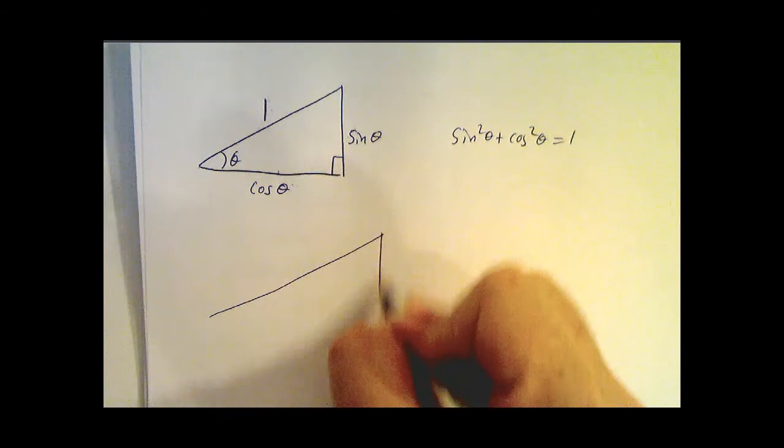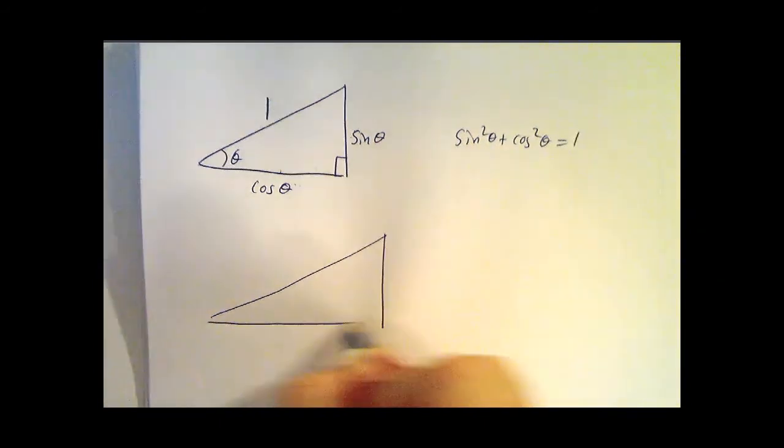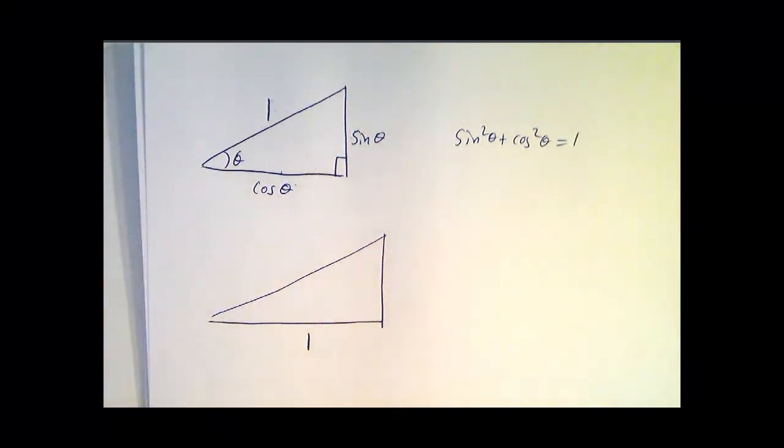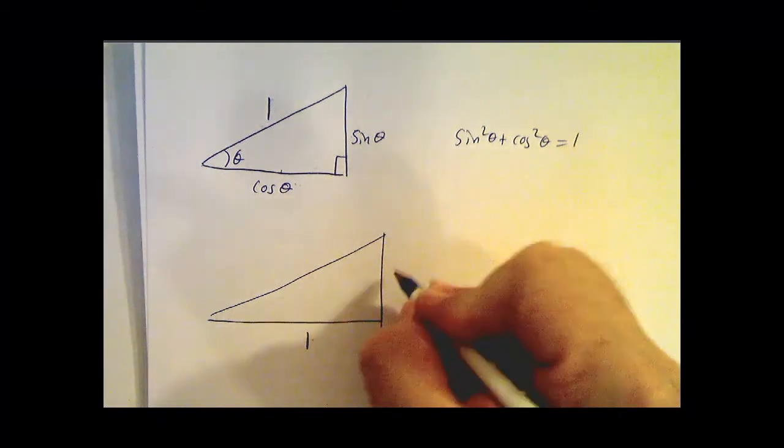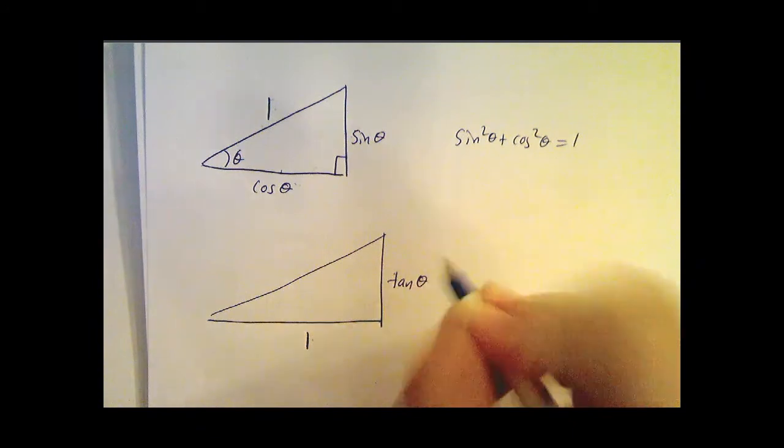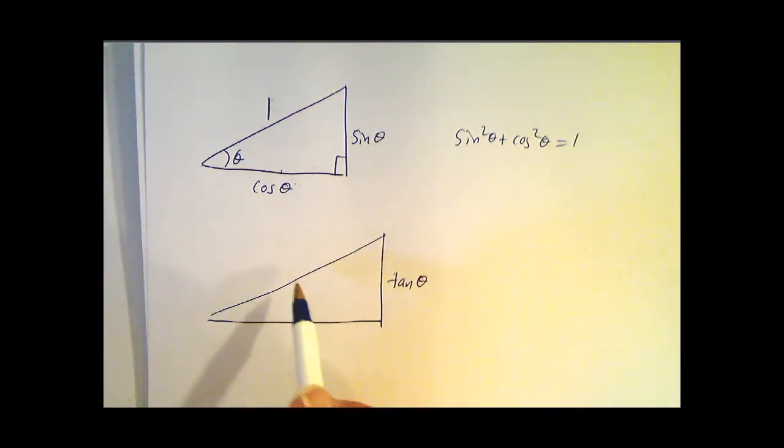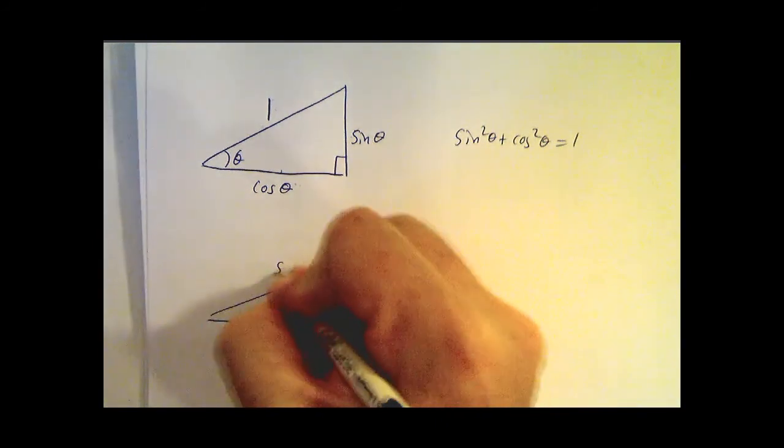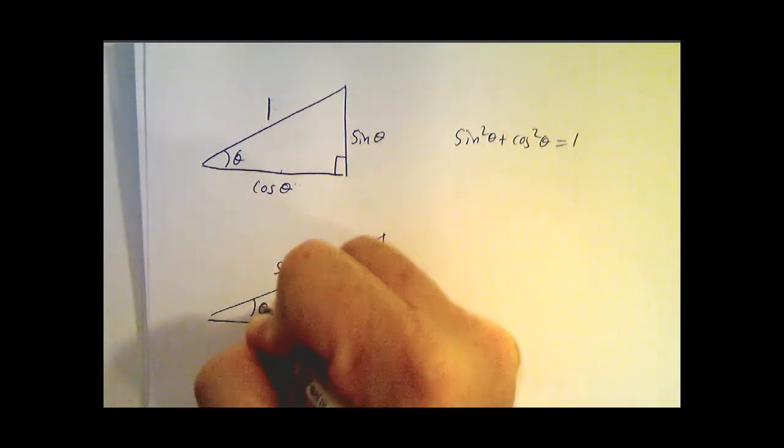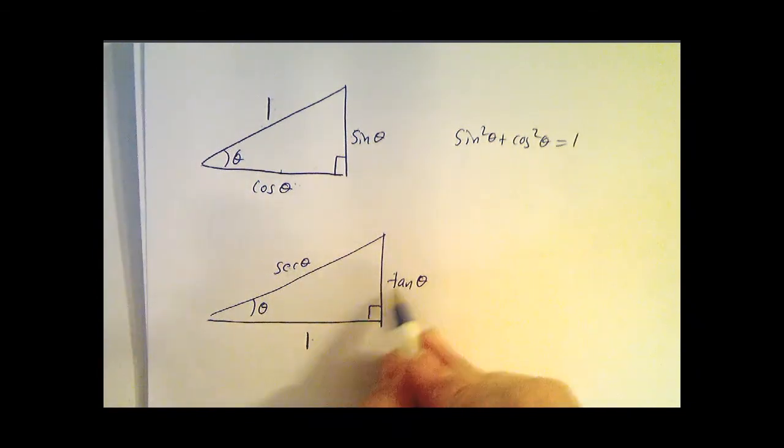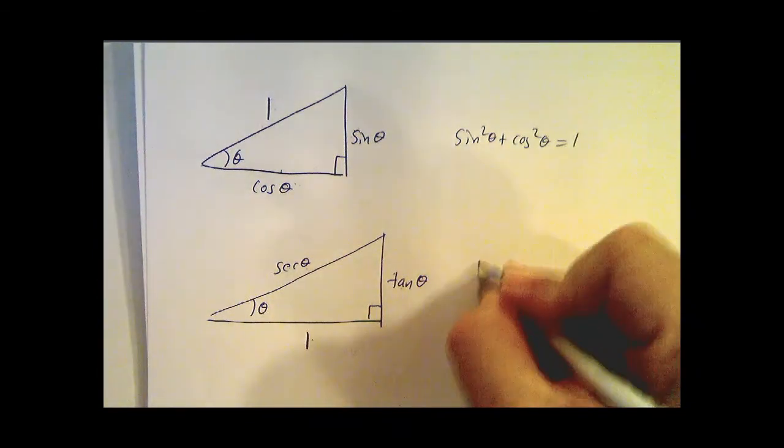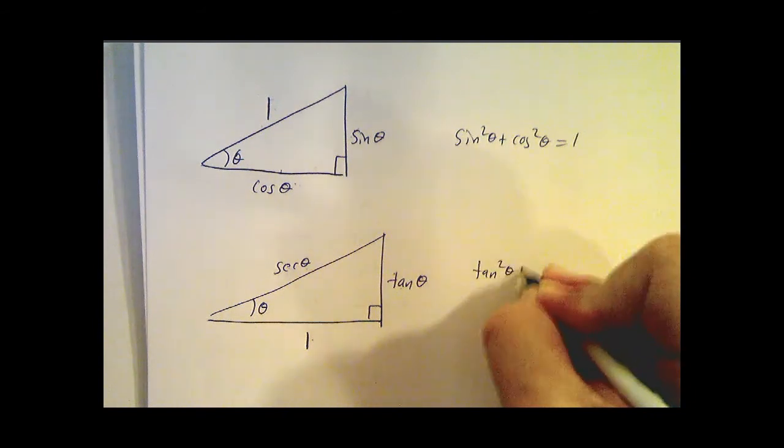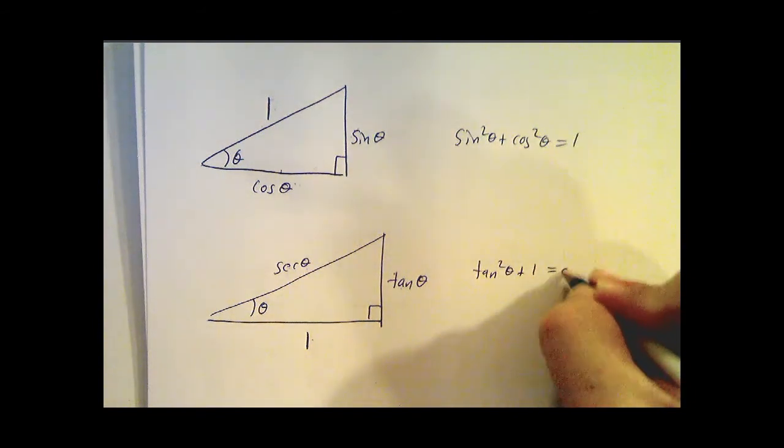Another triangle has to do with what happens if this side is 1. We know that the tangent is opposite over adjacent, so this is the tangent of theta. And the secant is the hypotenuse over the adjacent, it's 1 over the cosine, so this side is secant theta. So Pythagorean theorem, this squared plus this squared equals this squared.